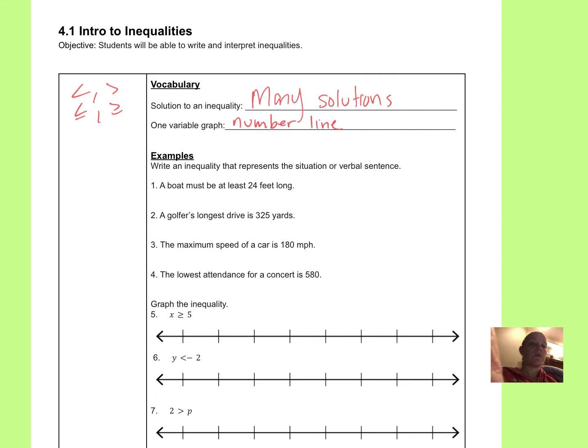We're going to use words to help us write an inequality. A boat must be at least 24 feet long. So we instantly want to see that word least and think less than, but if we really think about what this means, it must be at least 24 feet. So really it's saying that boat can be 24 feet long, but that's the smallest it can be. So it can be 24 or it can be bigger than that. So it can be 24, 25, 26. So let's use B for boat. It has to be bigger than or equal to 24 feet. It has to be at least. That means that's the least amount it can be or bigger than that.